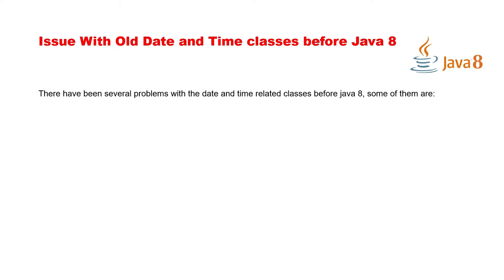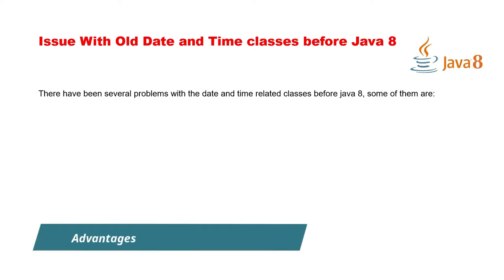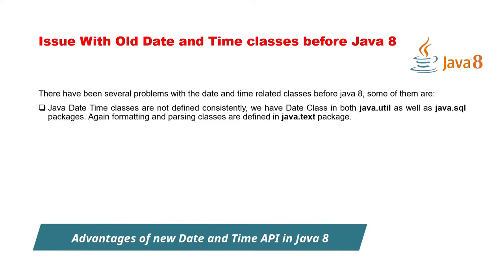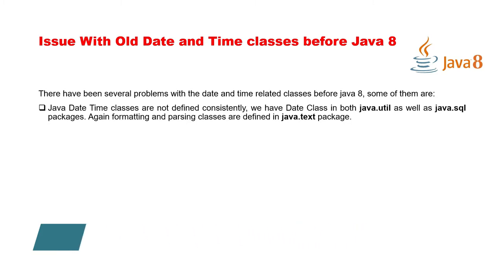There have been several problems with the date and time related classes before Java 8. The first problem is that Java DateTime classes are not defined consistently. We have a Date class in both java.util as well as java.sql packages.